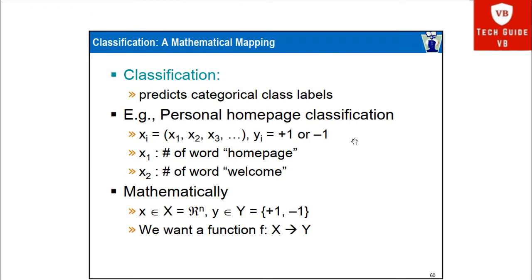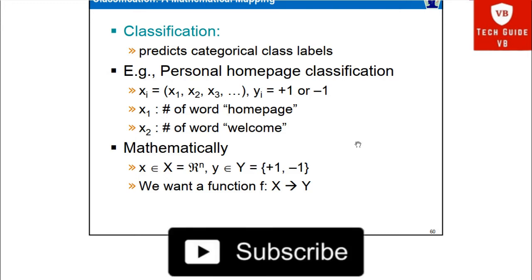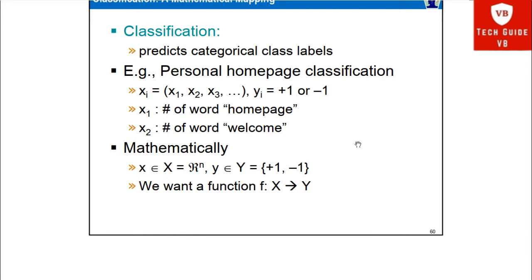Classification by backpropagation is a mathematical mapping model. Classification predicts categorical class labels. For example, in personal homepage classification, xi equals x1, x2, x3 and so on, and yi equals plus 1 or minus 1. Here x1 is the hash of the word 'homepage' and x2 is the hash of the word 'welcome'. Mathematically, x belongs to capital X and we want a function f of x to y. So this textual format data is represented in a mathematical form.